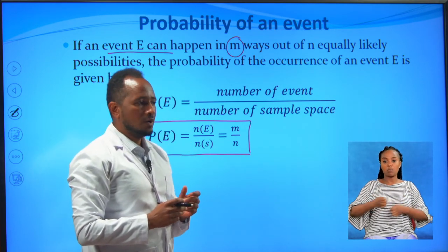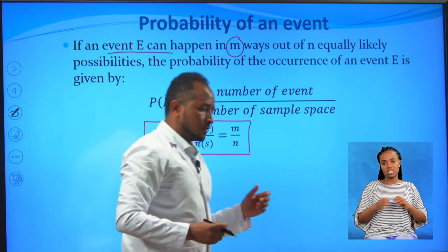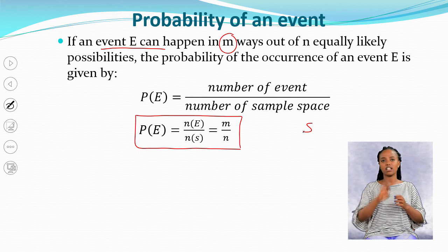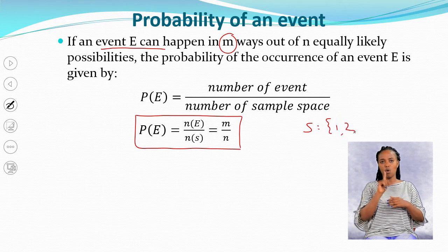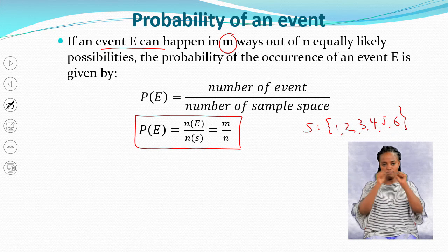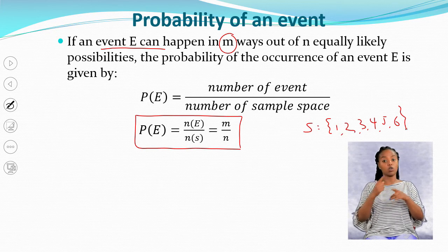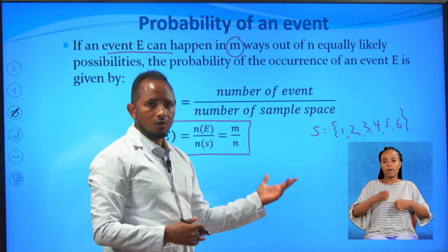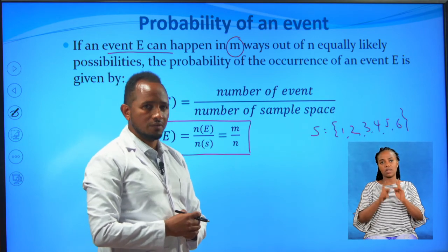For example, if you toss or roll a die, the total possible outcomes or sample space will be {1, 2, 3, 4, 5, 6}. These are the total possible outcomes under the experiment; we call it the sample space. And the subset of the sample space, we call it an event.